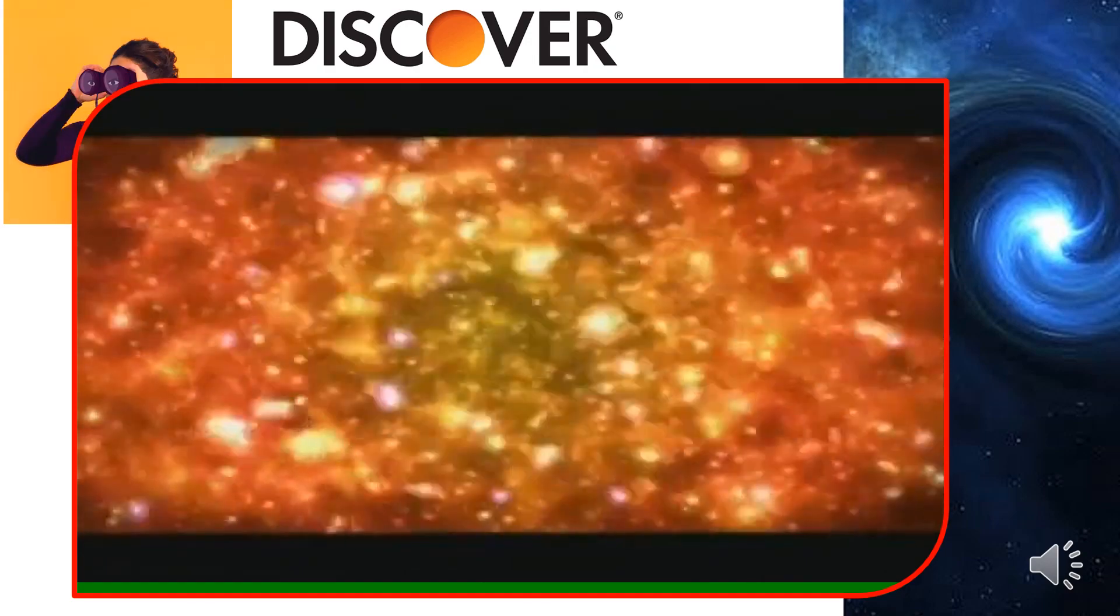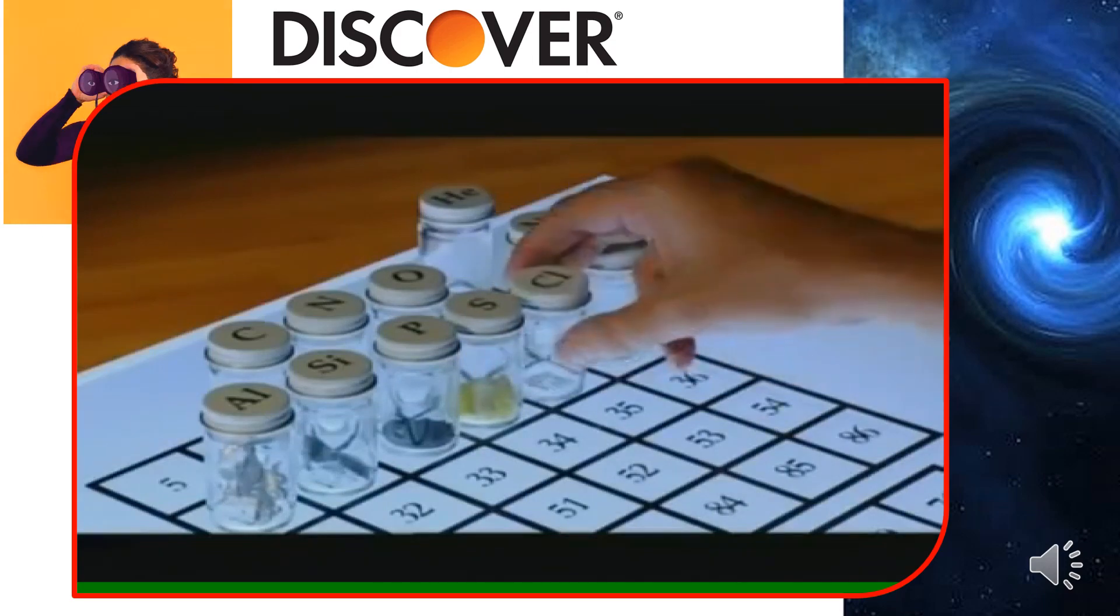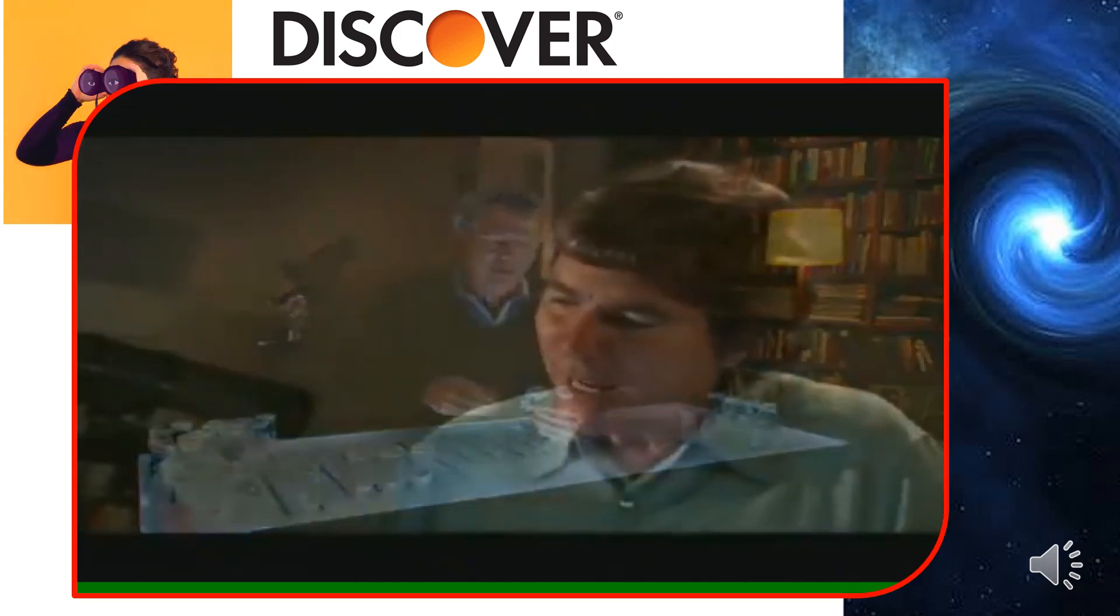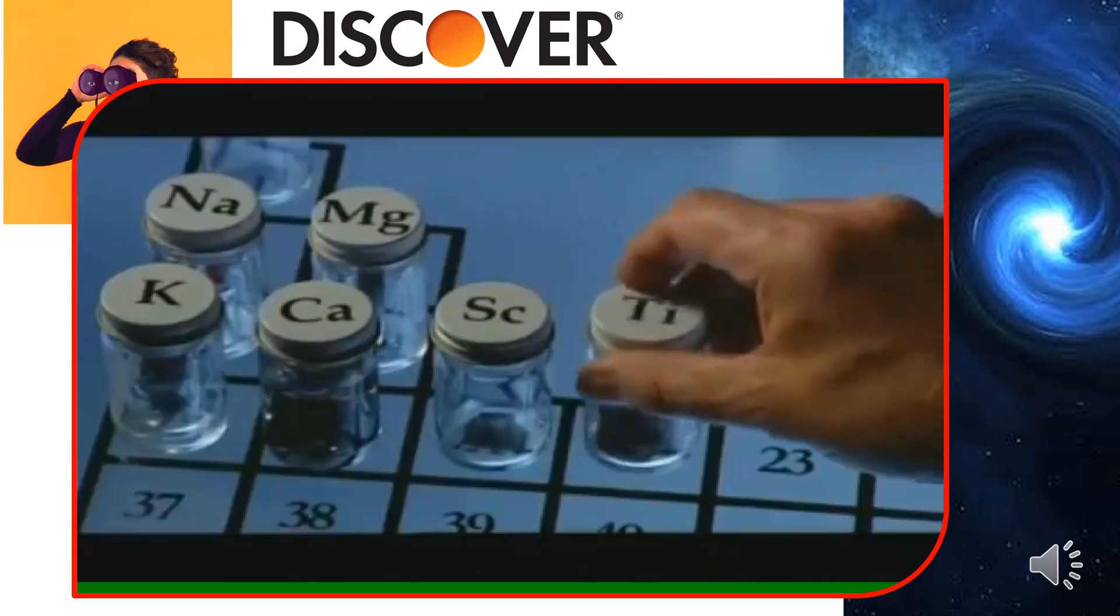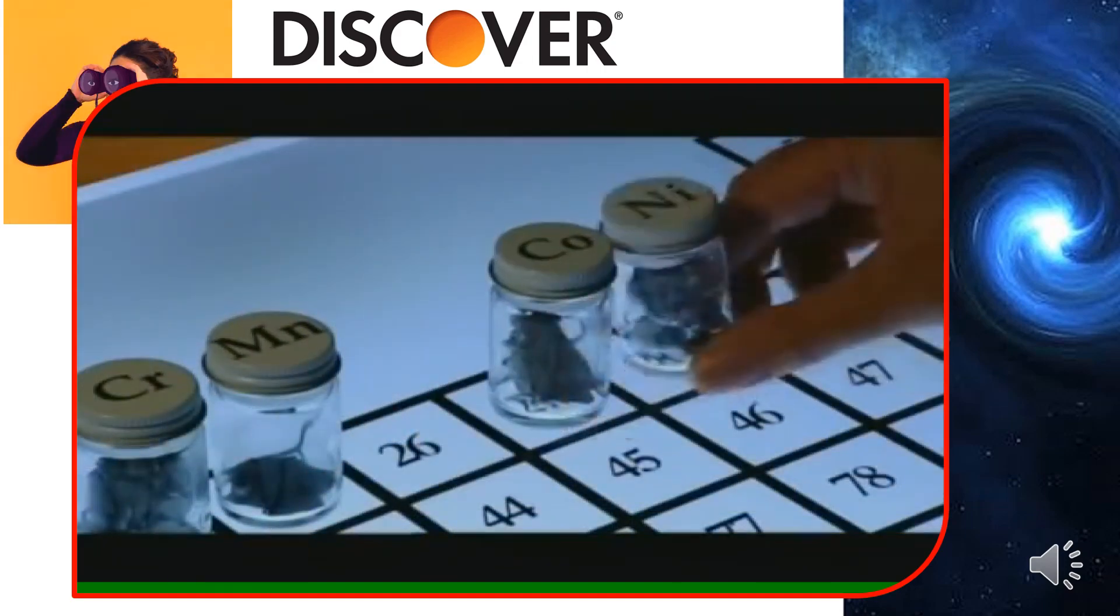Carbon fuses next, and still heavier elements begin to form. Sulfur, argon, chlorine. Potassium, calcium, scandium. The pace of this gets faster and faster. Back in the middle, silicon is starting to burn at three and a half billion degrees. It's tremendous temperature. It makes titanium, vanadium, chromium. Manganese, cobalt, nickel, and iron.